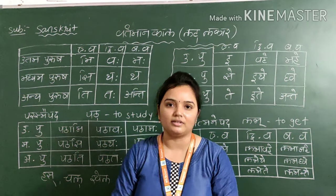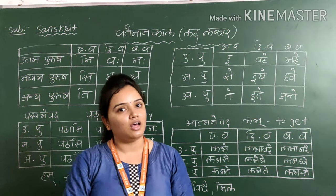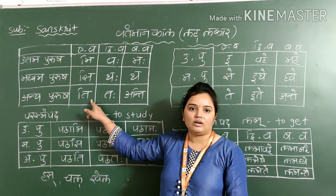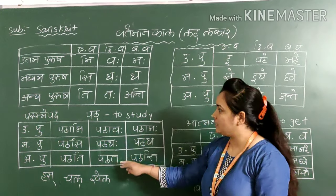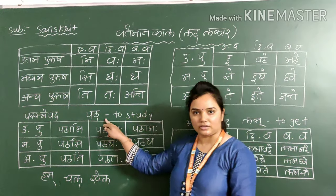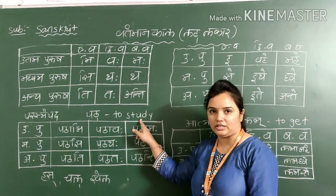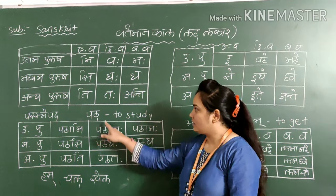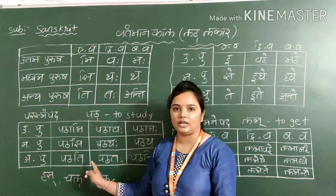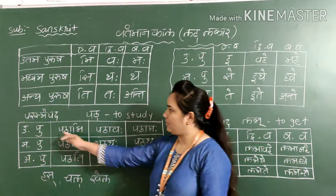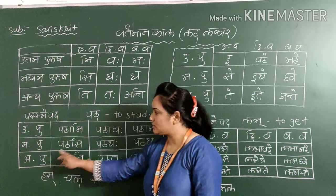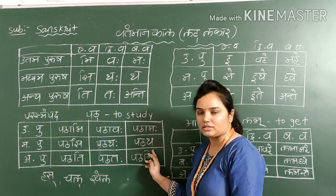So we say: mi, vaha, maha, si, thaha, ti, thaha, anti. In this format, we will use a verb. So here, suppose we will use the word 'path' — path means to study. Now we will frame the table again with the same structure: Uttam Purush, Madhyam Purush, Anya Purush, Ek Vachan, Dvivachan, and Bahuvachan.